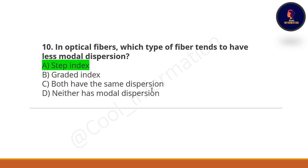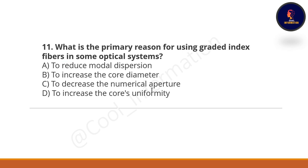Next question: What is the primary reason for using graded index fiber in some optical systems? Option A: to reduce modal dispersion. Option B: to increase the core diameter. Option C: to decrease the numerical aperture. Option D: to increase core uniformity. The correct option is A — to reduce modal dispersion.